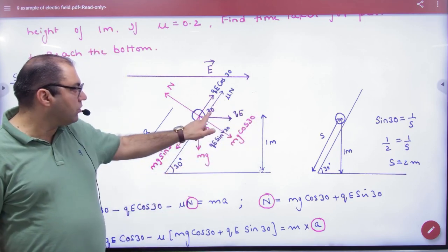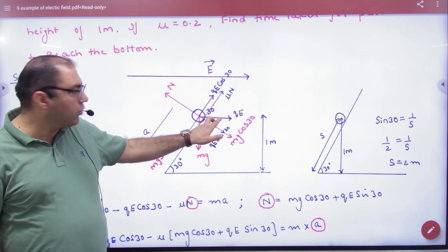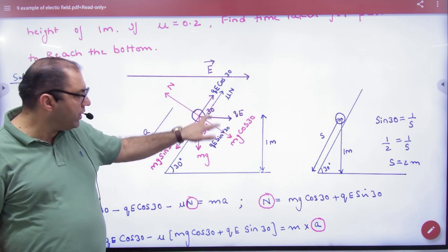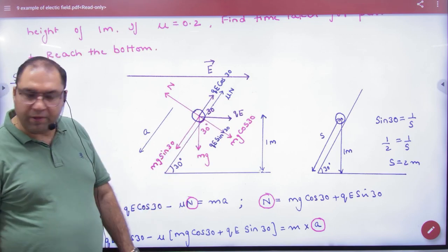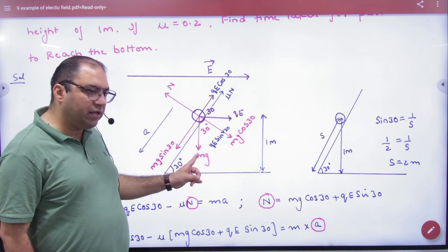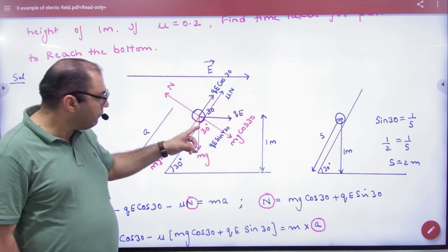If it is 30, corresponding to 30, QE has 2 components. QE cos 30 and QE sin 30. This point is clear. I repeat. The first force is weight, mg cos, mg sin. Normal reaction and force of friction.